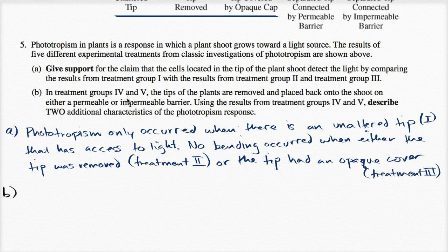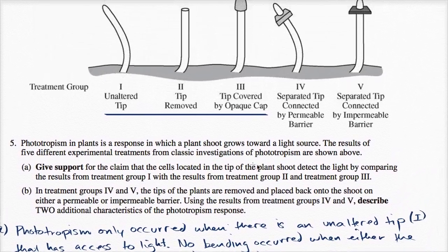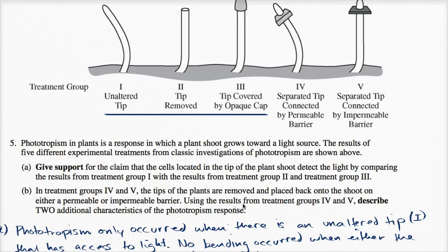In treatment groups four and five, the tips of the plants are removed and placed back onto the shoot on either a permeable or impermeable barrier. Using the results from treatment groups four and five, describe two additional characteristics of the phototropism response.